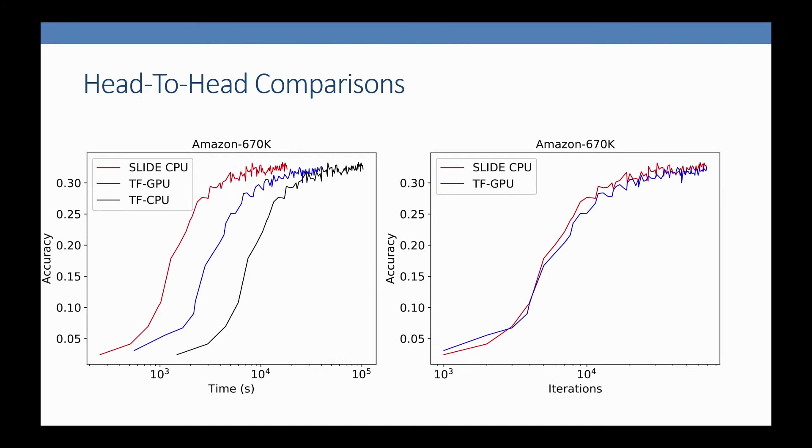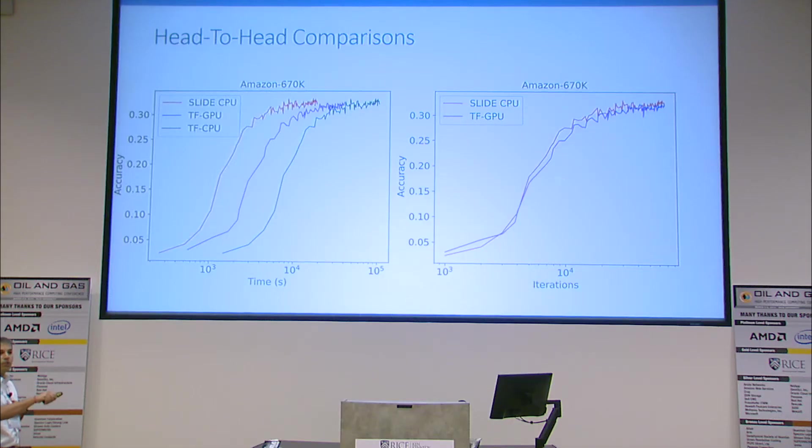This black line is TensorFlow on CPU. Time is in logarithmic scale, this is accuracy climb. The same thing with iteration and accuracy climb shows the optimization doesn't change anything—optimization-wise it's the same, because epoch-wise the optimization algorithm is the same. The black line is the running time—it's slow with CPU and TensorFlow. When I put TensorFlow on GPU V100, it's much faster, giving the blue line, which is expected.